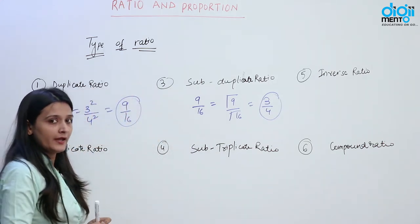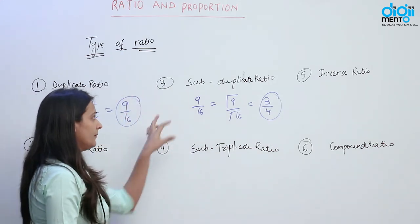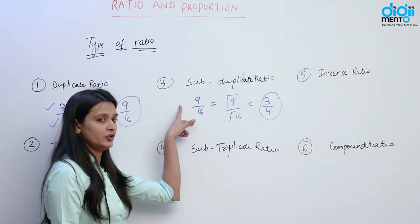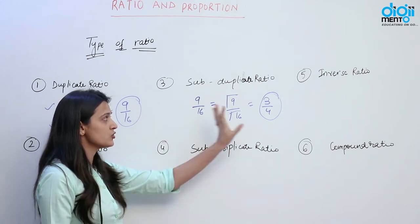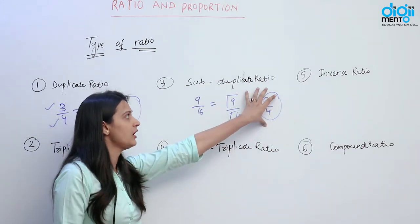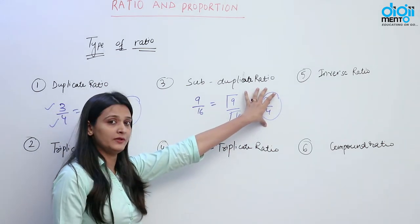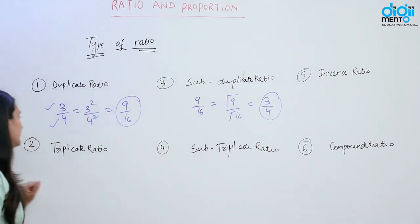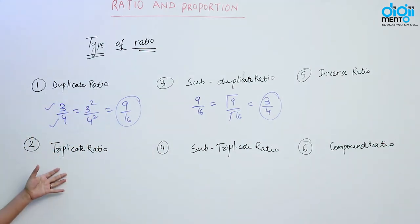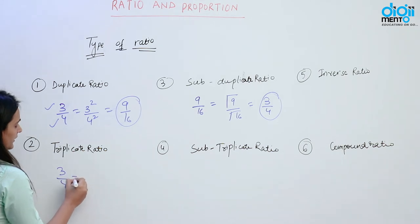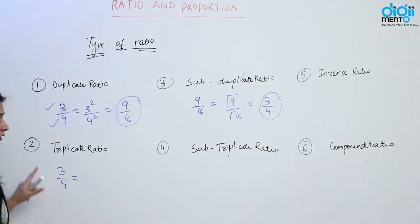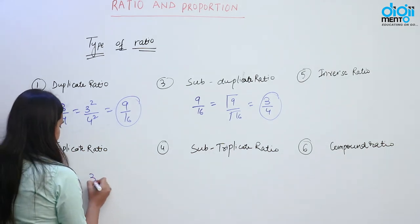Subduplicate ratio kya hai? Agar hamare 2 numbers ka ratio hai, unka agar hamne square root le liya, toh jo hume number milega woh subduplicate ratio hoga. Ab ham baat karte hain triplicate ratio. Triplicate ratio kya hota hai? Suppose if we have the number 3 by 4, then the ratio of the cubes of these numbers is known as triplicate ratio.